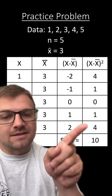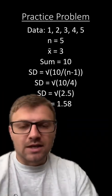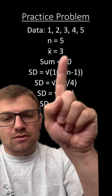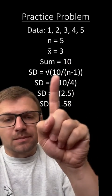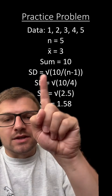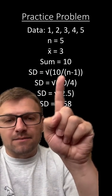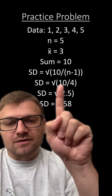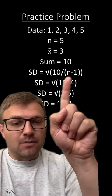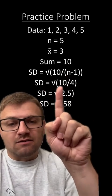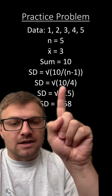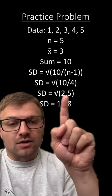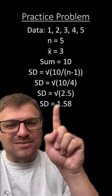So we take the sum of all of these numbers, which is 10. We have our data points, the number of data points which is five, the average which is three, and the sum of all of the variation is 10. So the standard deviation is the square root of 10 divided by n minus one — five minus one is four — so it's the square root of 10 divided by four. Standard deviation is the square root of 2.5, because 10 divided by four is 2.5. So standard deviation is 1.58.